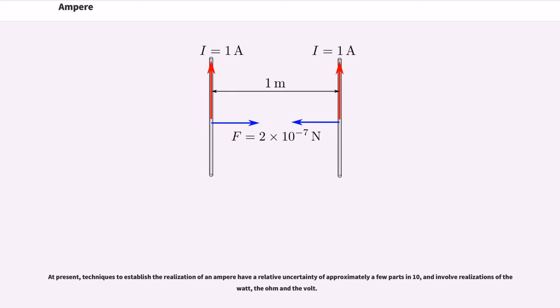At present, techniques to establish the realization of an ampere have a relative uncertainty of approximately a few parts in 10^7, and involve realizations of the watt, the ohm and the volt.